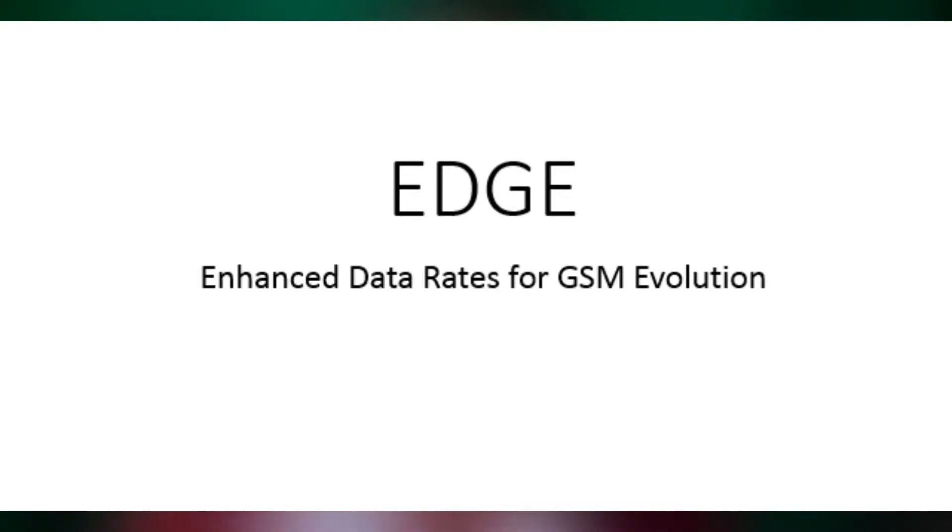Well, you're lucky because we will stop the wondering and put some answers to that. What is the meaning of E in mobile signal? Let's start with that. E stands for EDGE — E-D-G-E — meaning Enhanced Data Rates for GSM, also known as Enhanced GPRS. This technology is between 2G and 3G, so that's why some people call it 2.5G.